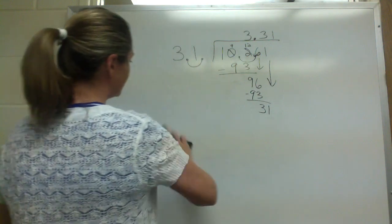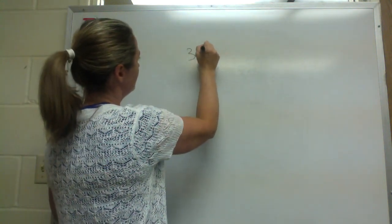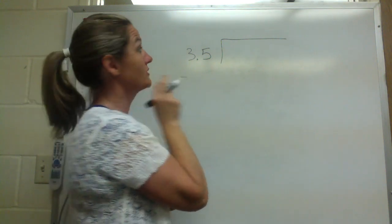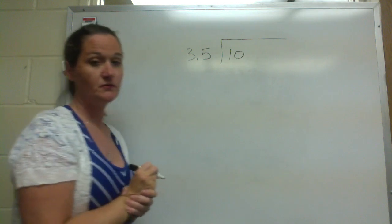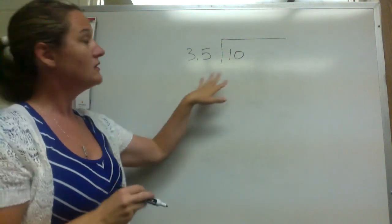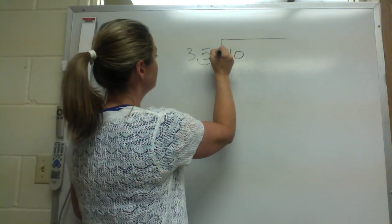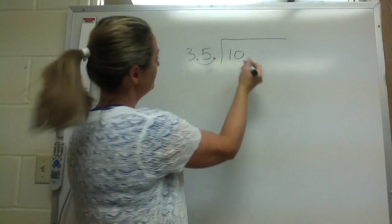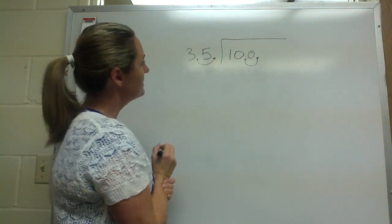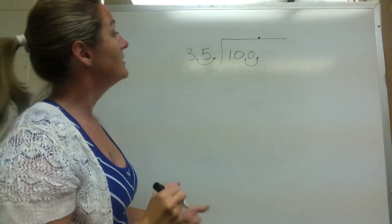Let me do one more where we're going to have to add some numbers to get this to work out evenly. Let's do 3.5 going into 10 — I'm just making this up, so I'm hoping it works out. How many times does 3 and 5 tenths go into 10? There's a decimal in the divisor, so we have to pick it up and move it to the end. There's not a decimal in the dividend, but it'd be at the end of the number — move it over and put a zero in that spot. Now we have 35 going into 100.